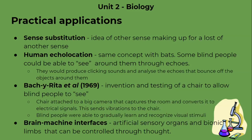Another briefly mentioned idea in the book was brain-machine interfaces — artificial sensory organs and bionic limbs that can be controlled through thought. That is it for unit 2, lesson 2: neuroplasticity. We hope to see you soon on our next video. Bye!